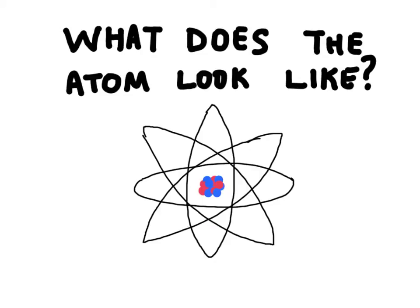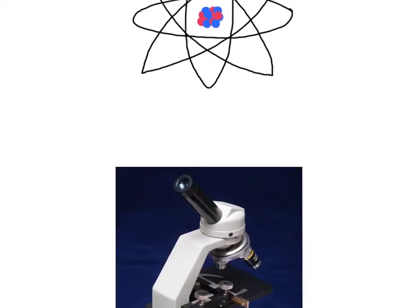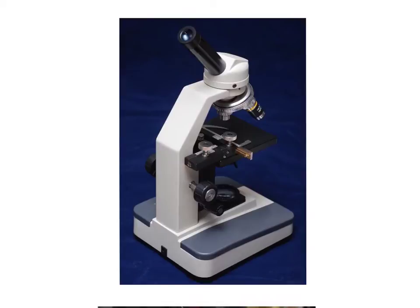Now nobody has ever seen an atom, they are just too small. We couldn't even see an atom with a microscope, not even a very powerful microscope. Normal microscopes like this one I have here are going to magnify the light that bounces off of an object and it will pass through these lenses and into this eyepiece and into our eye.